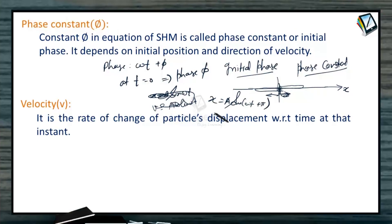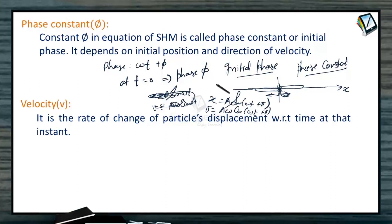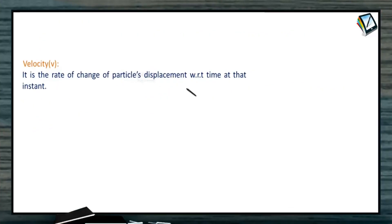If at t equal to 0 the particle is at the mean position but moving in the opposite direction, then x would be a sin(omega t plus pi). Pi is the phase constant because differentiating gives velocity a omega cos(omega t plus pi), and at t equal to 0 the velocity is minus a omega. That is how the phase constant is selected based on the initial state of the particle when t equal to 0 is chosen.